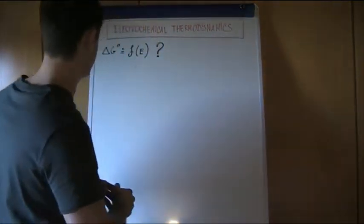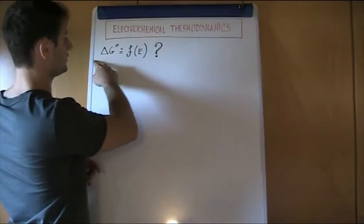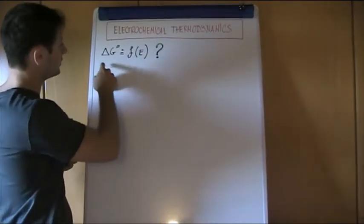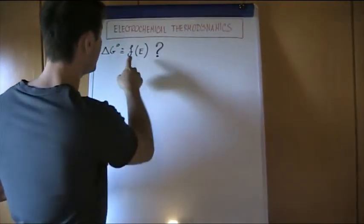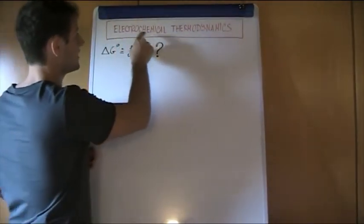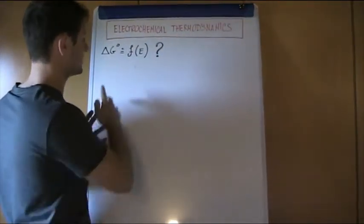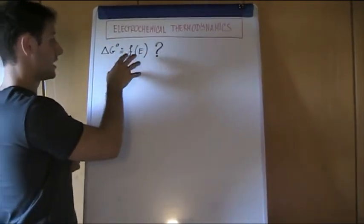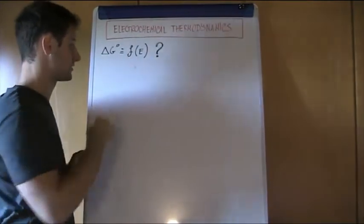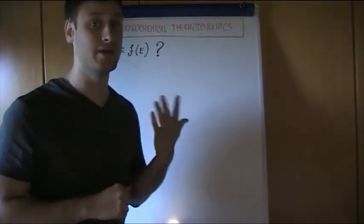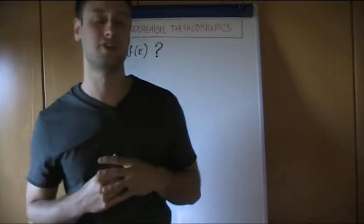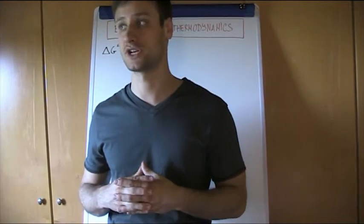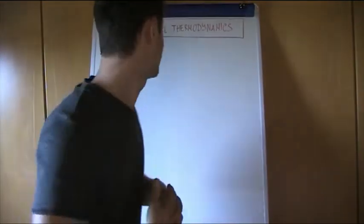So now what we need to do is proceed with a formal resolution. We will see how to solve in a more precise way this function, which represents the final aim of thermodynamics in electrochemistry. The solved function correlating the free energy with the potential will be the starting point for the Nernst equation and the Pourbaix diagrams.